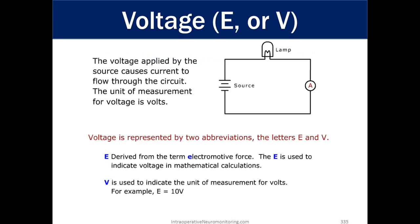First is voltage, abbreviated E or V. The voltage applied by the source causes current to flow through the circuit. The unit of measurement for voltage is volts. Voltage is represented by two abbreviations, the letters E and V. The E is derived from the term electromotive force. This is the older term that's not used that much anymore. The E is used to indicate voltage in mathematical calculations. V is used to indicate the unit of measurement for volts. For example, E equals 10 volts.